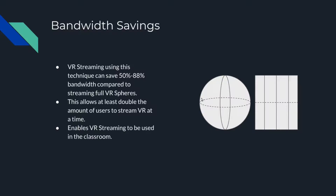When you move your head around, the phone you're using for a headset will show you different views on the sphere of the video, which gives you the appearance of looking around in VR. When you're watching a VR video you can only see about 90 degrees of the field of view — that's one of these little chunks, one of these eighths of the sphere. So really we only need to stream about an eighth of the sphere to the user, not the whole thing. That can give us a lot of bandwidth savings — streaming just one tile is about 88% bandwidth savings.